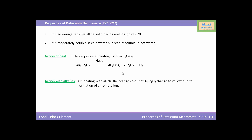Now we will see the action of potassium dichromate with alkalies. On heating with alkali, the orange color of potassium dichromate changes to yellow due to formation of chromate ion. You can see potassium dichromate when reacted with KOH, i.e. an alkali, converts to potassium chromate K₂CrO₄, and the orange color changes to yellow.